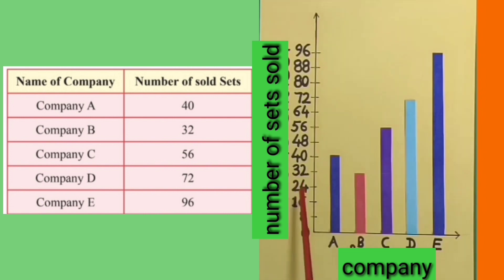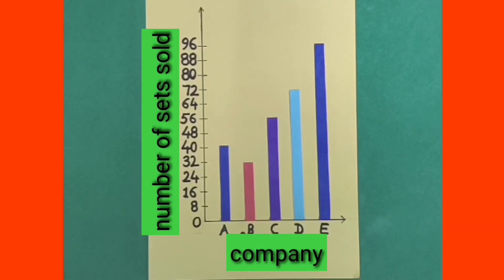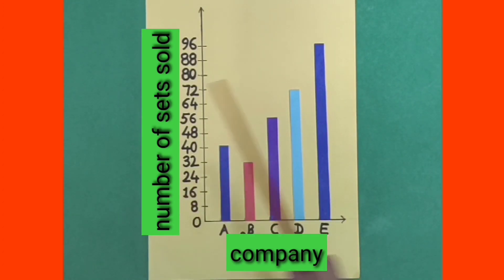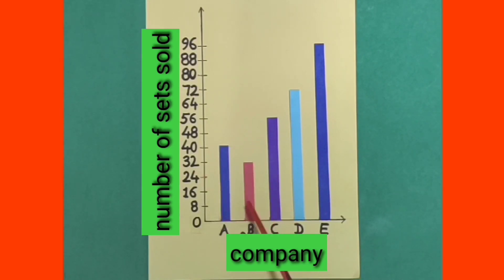So, we have drawn a bar graph representing the data given in this table. Dear students, now let's read this bar graph. Can you tell me which company sold the maximum number of mobile sets? We can see that the rectangular bar of company E is the highest one, at the level of 96. So, company E sold the maximum number of mobile sets. Can you tell me which company sold the minimum number of mobile sets? Company B represents the smallest rectangular bar in this bar graph at the level of 32. So, company B sold the minimum number of mobile sets.